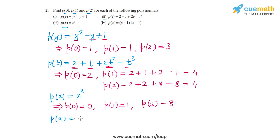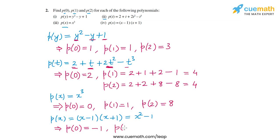Finally, for the fourth part: p(x) equals (x minus 1)(x plus 1), which can also be written as x squared minus 1. So p(0) equals 0 squared minus 1, that's minus 1. p(1) equals 1 squared minus 1, which is 0. And p(2) equals 2 squared minus 1, or 4 minus 1, which is 3. These are the answers to all four parts of this problem.